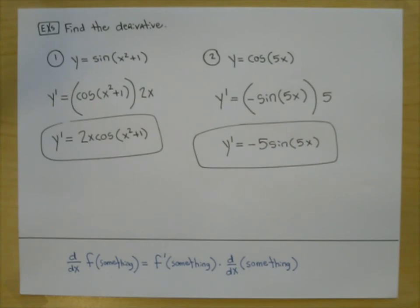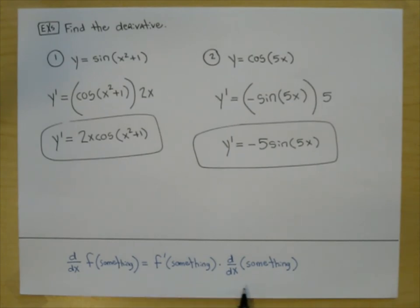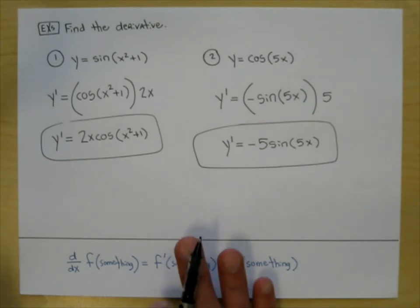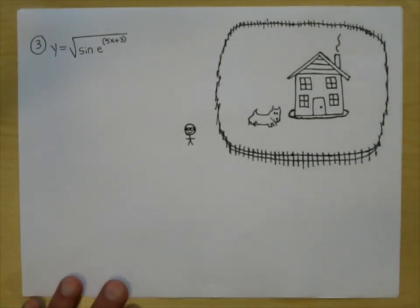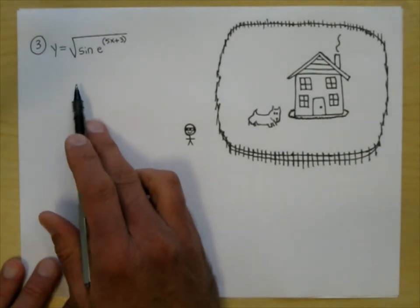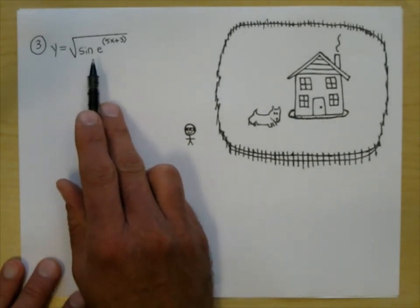The chain rule seems pretty simple, but when you have a composition of more than two functions it can get confusing. I've got a great analogy — I found part of this in a book, and I came up with part of it in college. So here's problem number three: find the derivative of y equals the square root of sine of e raised to the 5x plus 3 power.